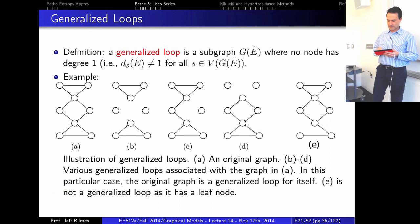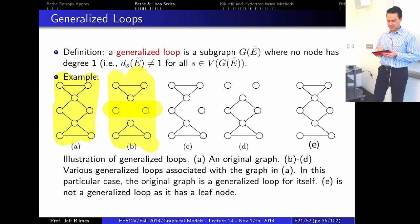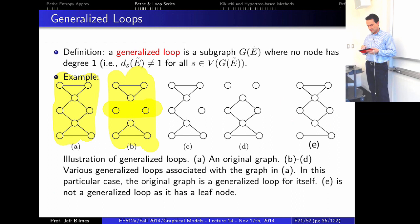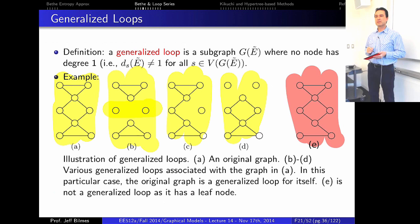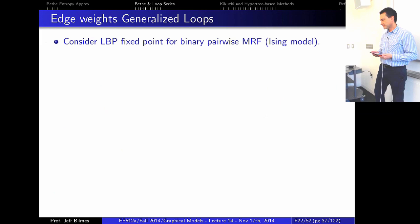Examples of generalized loops from the book: any graph where the minimum degree in the subgraph is not one qualifies. Nodes with degree zero in the middle are fine. A subgraph with one vertex of degree one is not a generalized loop. Regular cycles are generalized loops, and more complex structures also qualify.